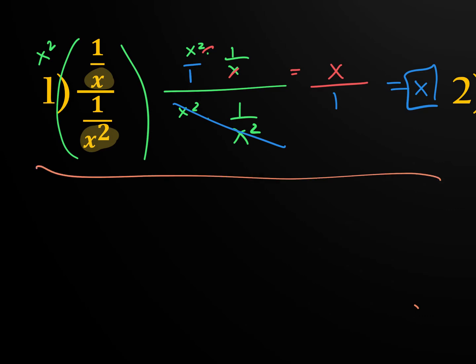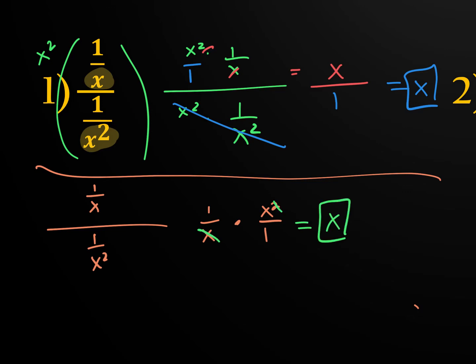The second method: there's already only one fraction in both the numerator and denominator. The division bar means divided, so it becomes multiplication and we flip the bottom to get x squared over 1. Cross-cancel the x's and we get x. Both methods give the same answer. Sometimes one is easier than the other — I tend to do keep-change-flip if there's only one fraction in the top and one in the bottom.